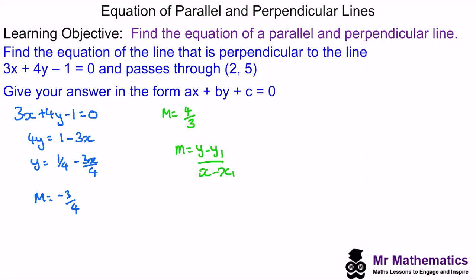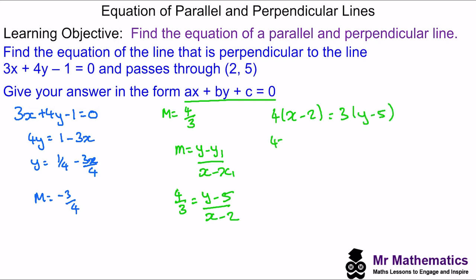Now we can use the equation for the gradient to write the line in the required form. We'll substitute in 4 thirds, giving us 4 thirds equals y minus 5 over x minus 2. We'll multiply out the 3 and the (x minus 2), expand the brackets, and move all the terms to the left-hand side. So this is the equation of the perpendicular line.